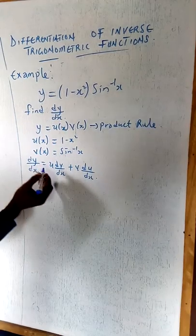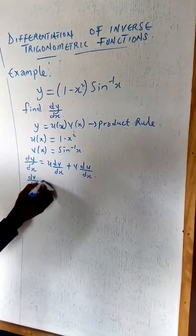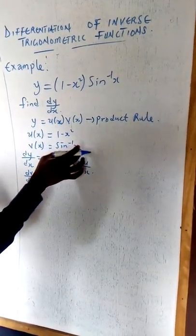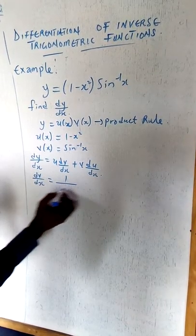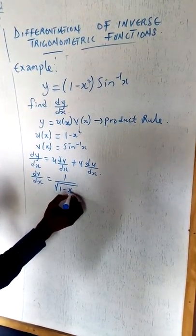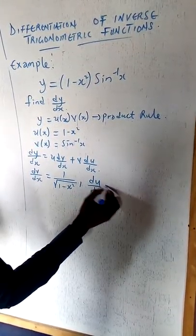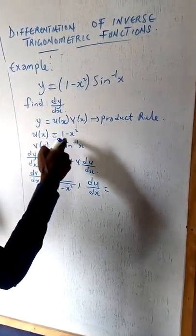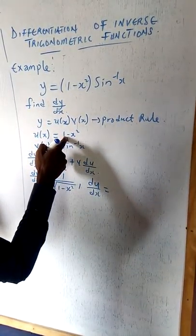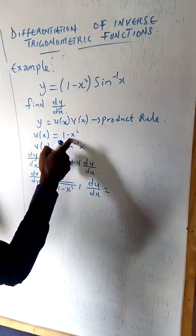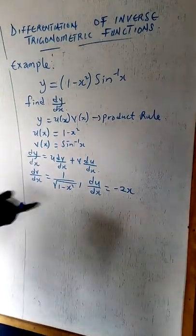We need dv/dx and du/dx. For v = arcsin(x), the derivative dv/dx is one over the square root of (1 minus x squared). For u = 1 minus x squared, differentiating gives du/dx = zero minus 2x, which is minus 2x, using the power rule.